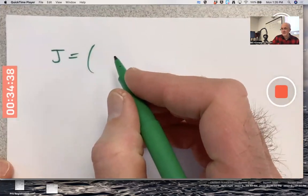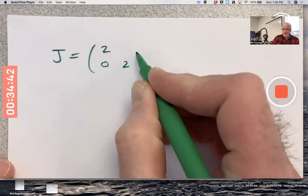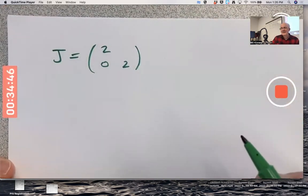One way to make a simple matrix with two as a repeated eigenvalue is to make a diagonal with twos along the main diagonal. But if I did that, that would not work for this problem because it would be a diagonal matrix, not a Jordan canonical form, which is not diagonal.